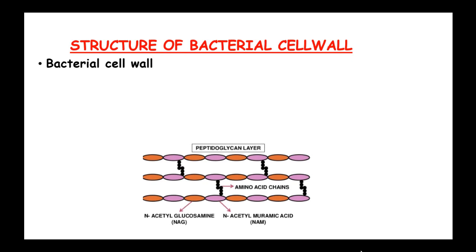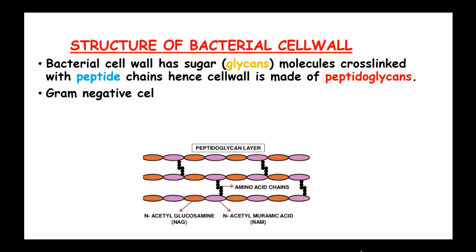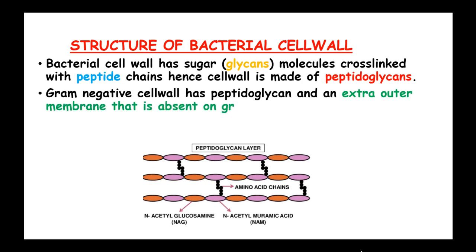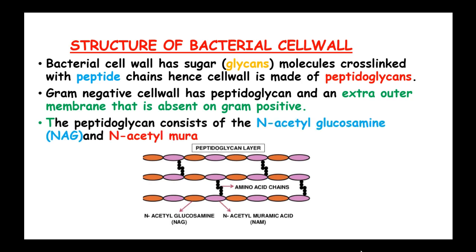We have to look at the overview of the bacterial cell wall. The bacterial cell wall has sugar or glycan molecules cross-linked with peptide chains, hence they are made of peptidoglycans. The gram-negative cell wall has a peptidoglycan layer and an extra outer membrane, which is absent in gram-positive bacteria. The peptidoglycan consists of N-acetylglucosamine and N-acetylmuramic acid.